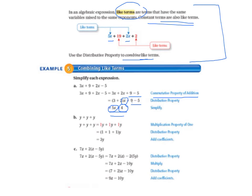Moving on to letter B, we have y plus y plus y. We need to think of that as 1y plus 1y plus 1y. That's called the multiplication property of 1. Then we can use the distributive property 1 plus 1 plus 1 times y and add the coefficients. That gives us 3y.